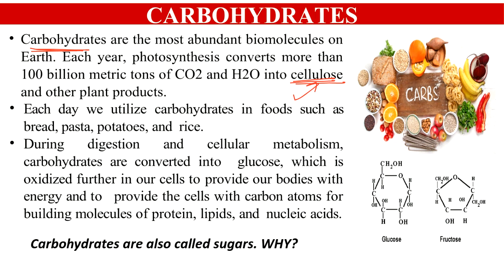Our bodies also consist of a lot of carbohydrates serving great functions. The same is true for bacteria, plants, and other animals. Each day we consume a lot of carbohydrates — they are one of the vital nutrients along with fats and proteins. Most food we consume, including vegetables, fruits, bread, pasta, and rice grains, is enriched with carbohydrates, which serve as a source of energy for the body. During digestion and cellular metabolism, these carbohydrates are converted into glucose.